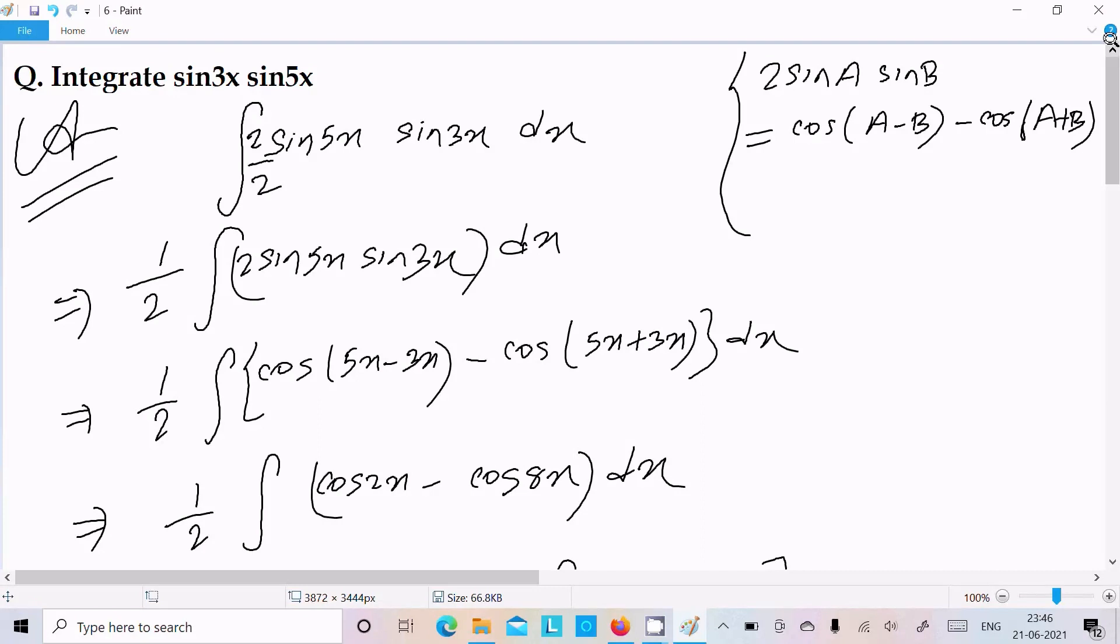Next, it takes the form 2sinA sinB, that is cos(A - B) - cos(A + B).